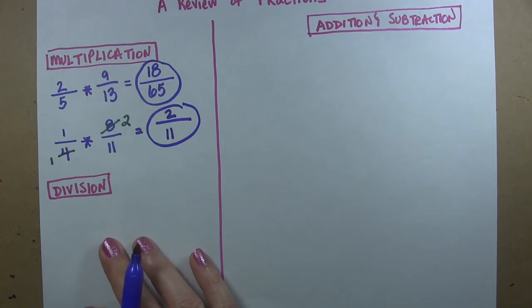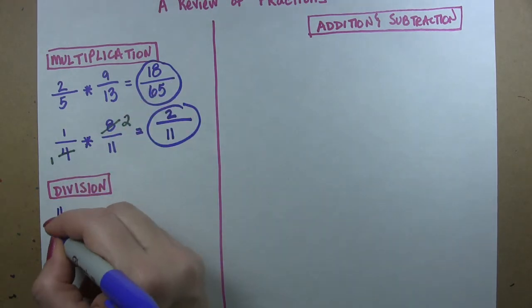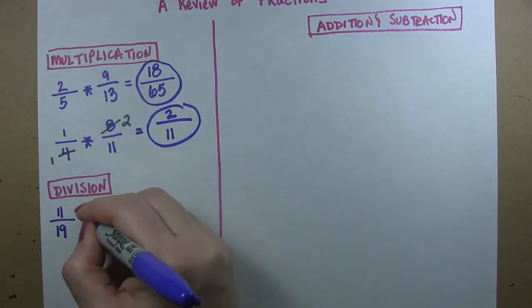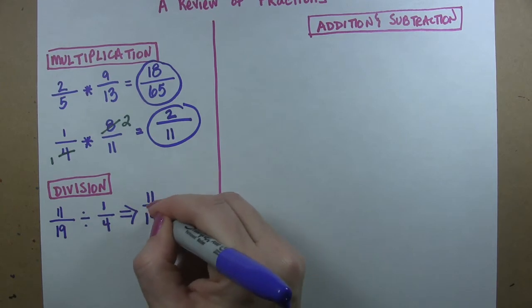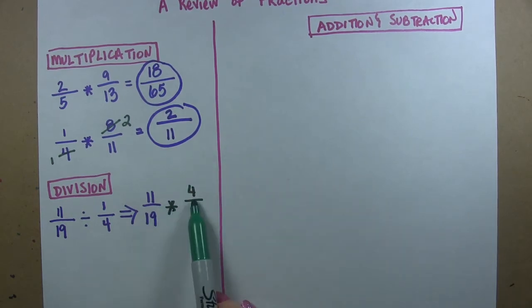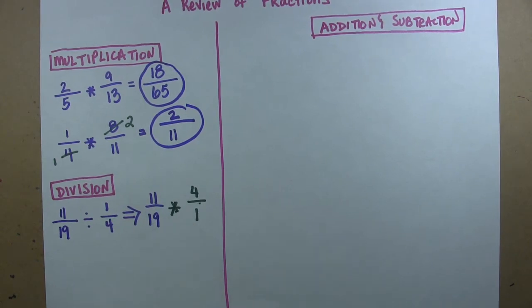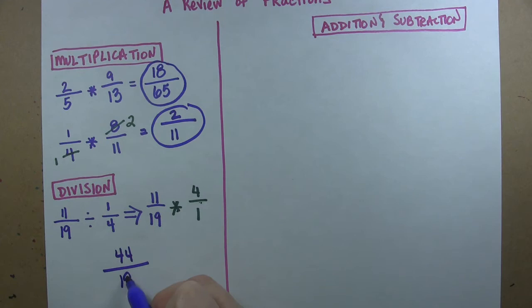Okay now with division it's very similar because what we're going to do is we're going to turn our division problem into a multiplication problem. So we have 11 19ths divided by 1 fourth. We are going to turn that into 11 19ths times 4 over 1. That's called multiplying by the reciprocal. That's a fancy word for the upside down version. So now we have a nice simple multiplication problem. 11 times 4 is 44, 19 times 1 is 19. And remember the great thing about this stage of the game with math is that you are totally allowed to keep that as an improper fraction if that's what you would like to do.